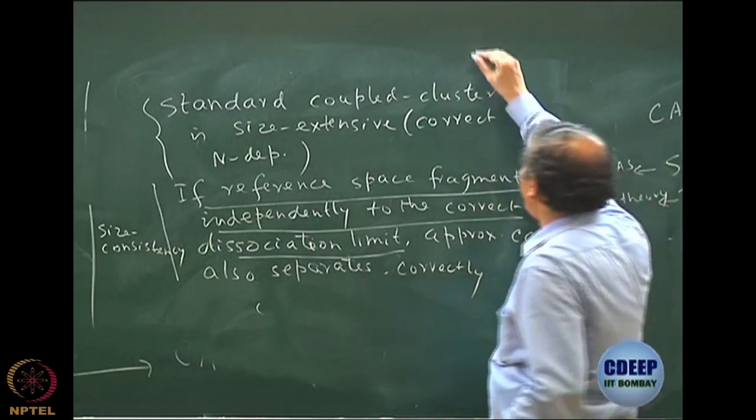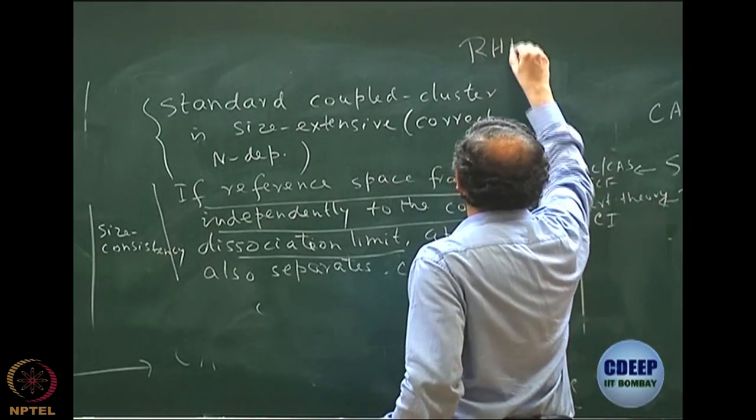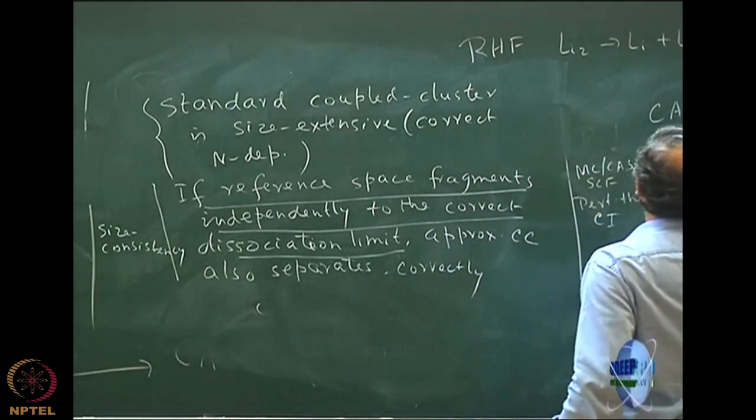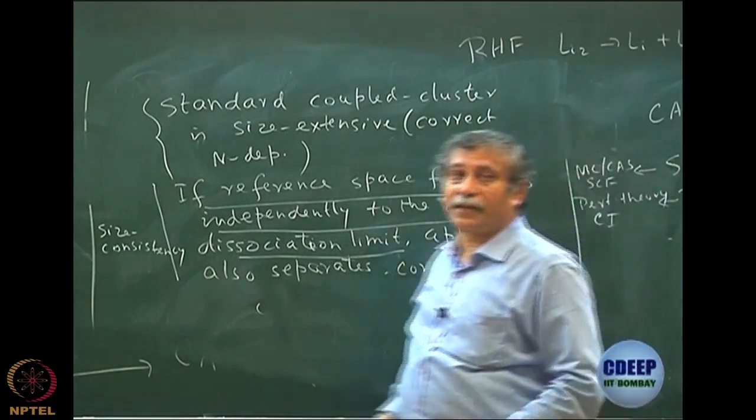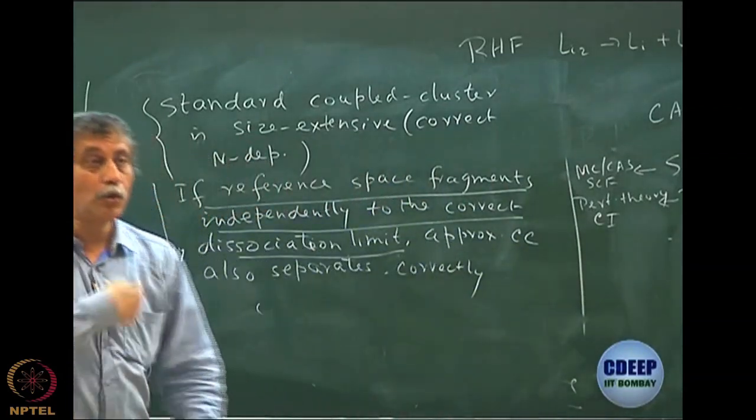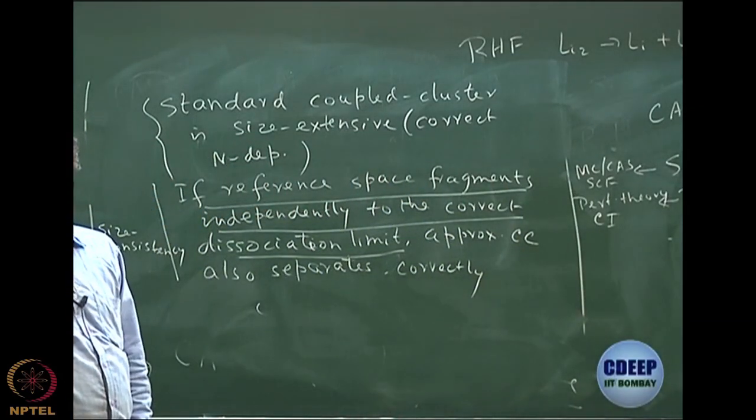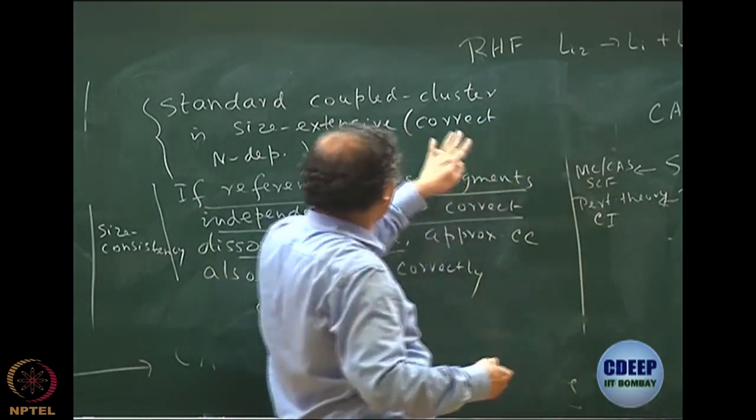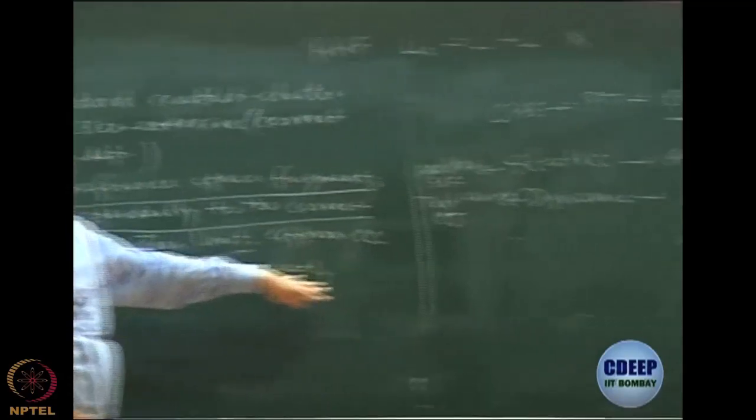If I start with a RHF and I again want to repeat for Li2 going to Li plus Li, it does not dissociate correctly. So whatever you do after this it will not help. So even if I do coupled cluster on this RHF, although coupled cluster is size extensive, dissociation would not be achieved.